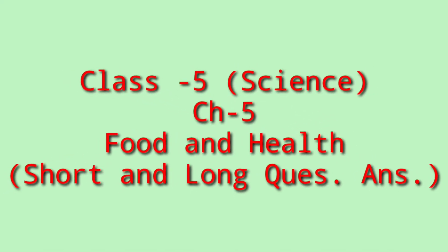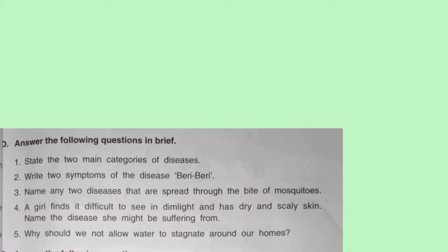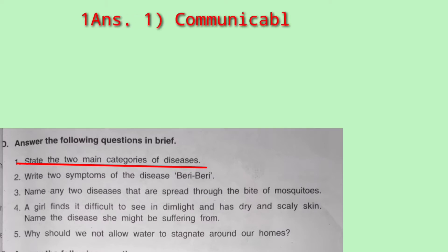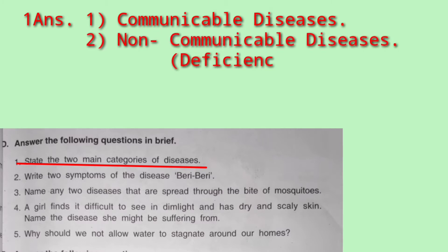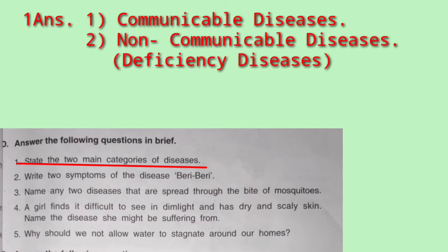Hello class five. Today we are going to do the question answers of chapter number five, that is Food and Health. First question: state the main categories of diseases. They are communicable diseases and non-communicable diseases.